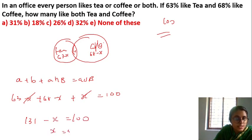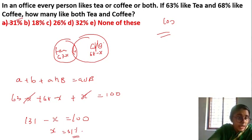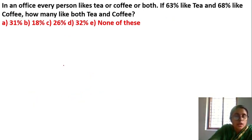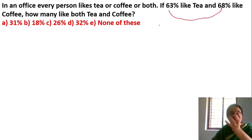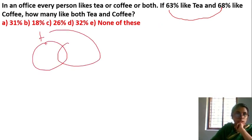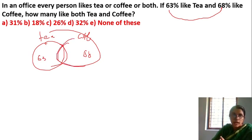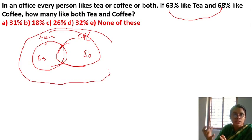You will get x is equal to 31%. So the answer is 31%. The two-step method: you add 63% and 68%, then subtract 100%. Tea is 63%, coffee is 68%, total must equal 100%.